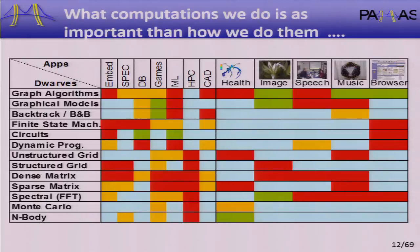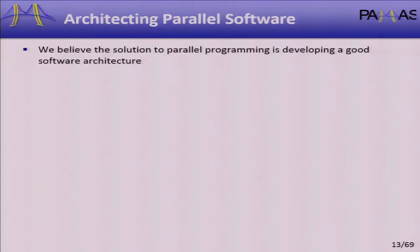The nuance here is that what computations we do is as important as how we do them. When you go through the contemporary software engineering curriculum, there's a lot of talk about how you put code together, not a lot about what the code actually does. These are our computational patterns — there are 13 of them, the building blocks of computation.